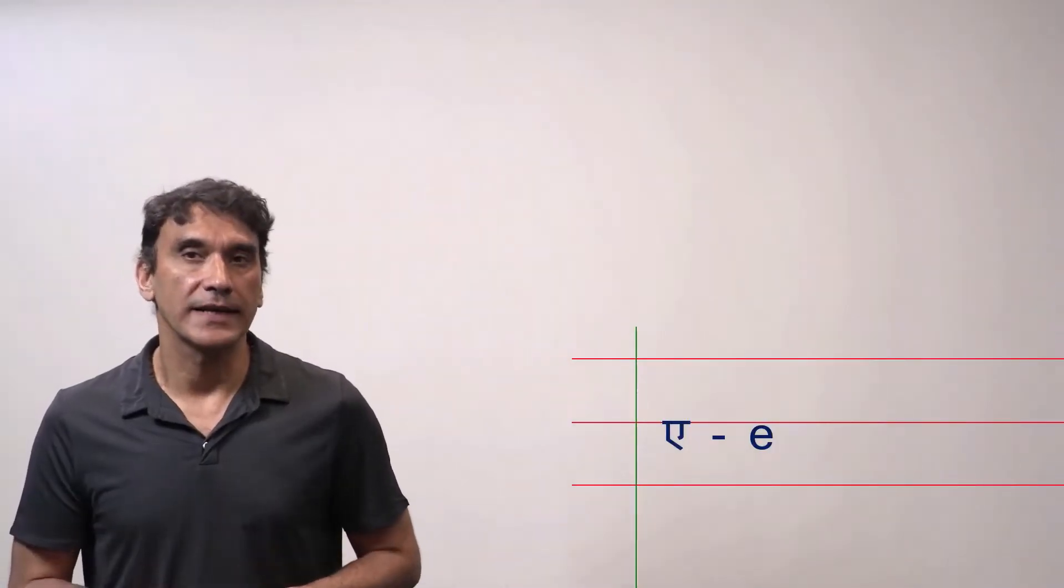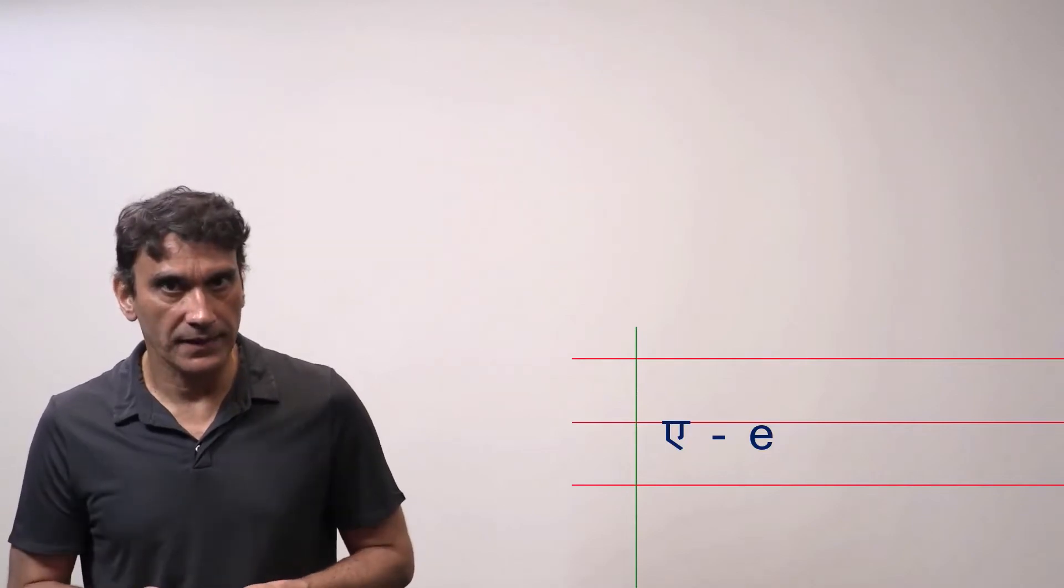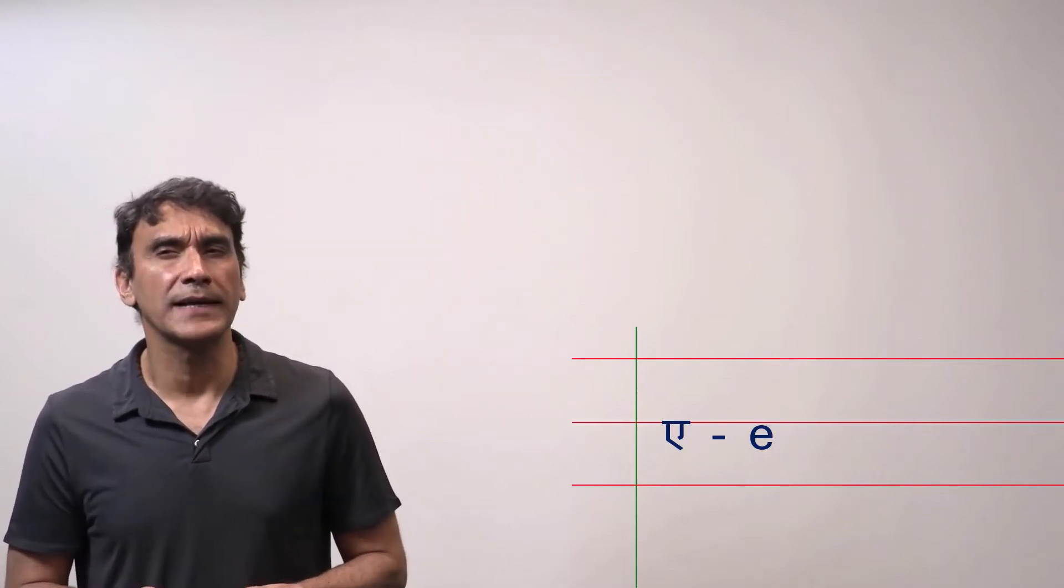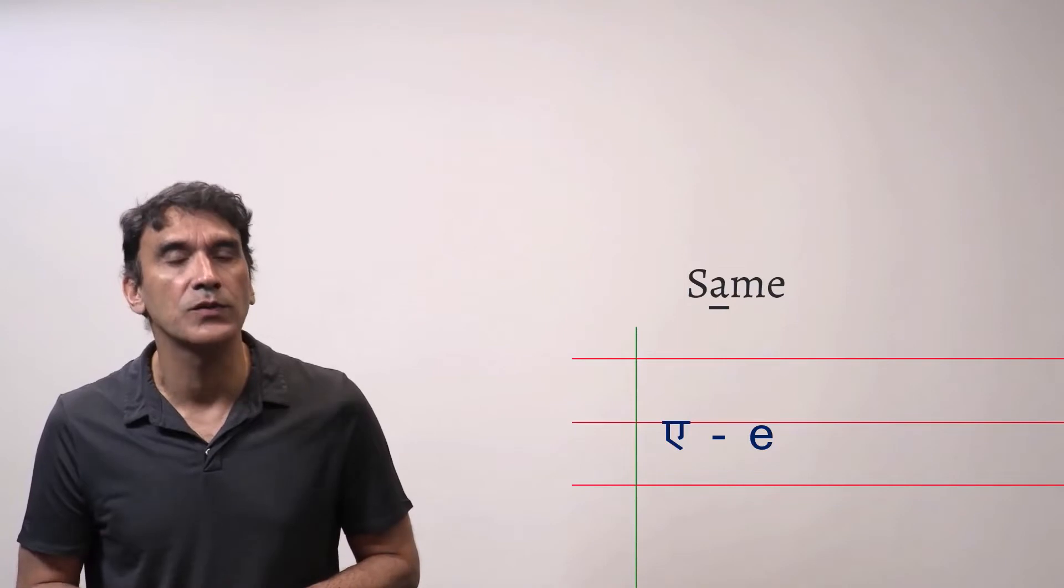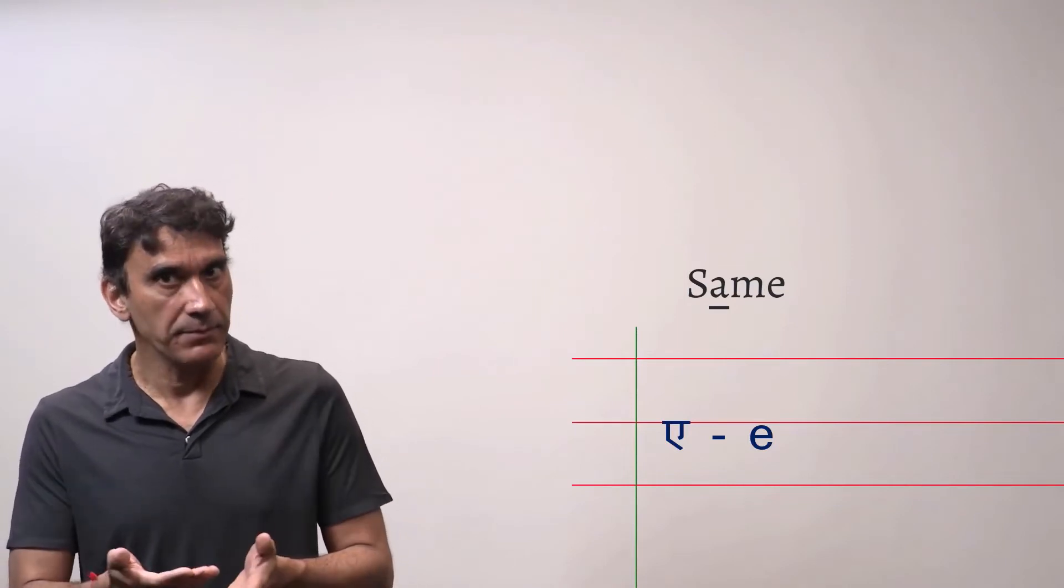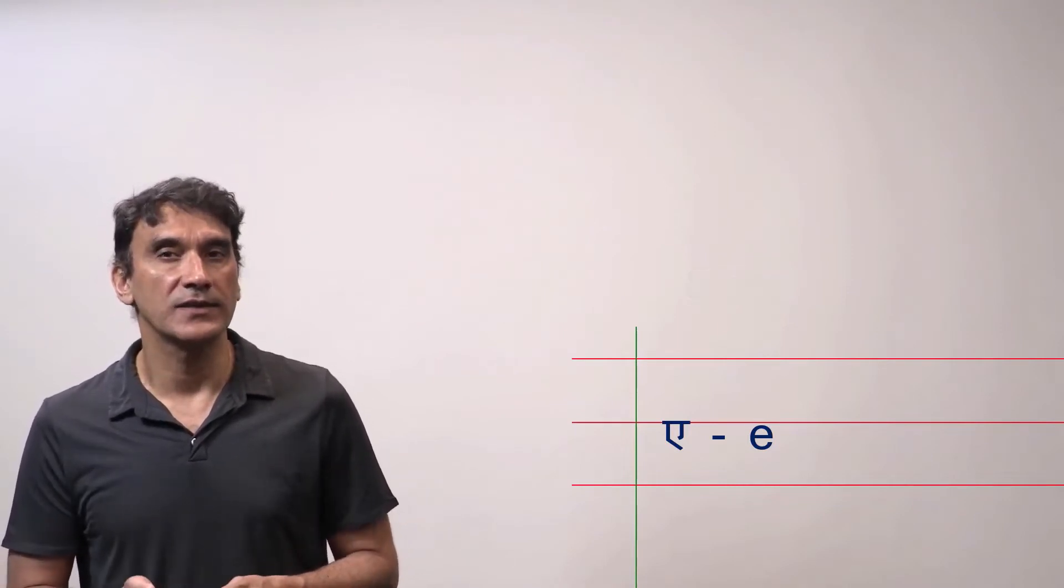The next vowel is e. The sound of the vowel is e. The sound of the vowel e is something like the e sound in the English word same. Same, e. You can see how it is written here.